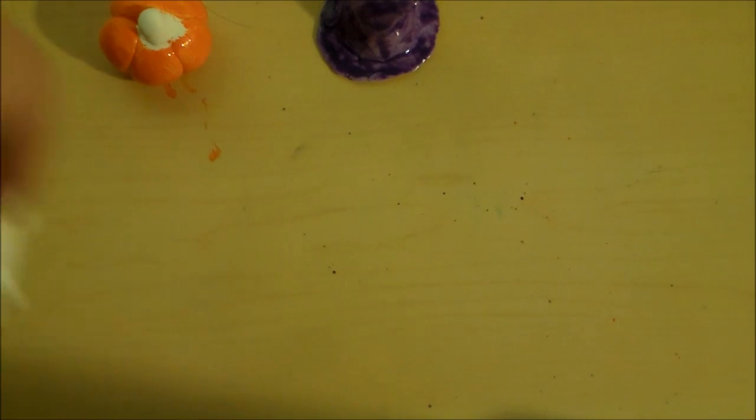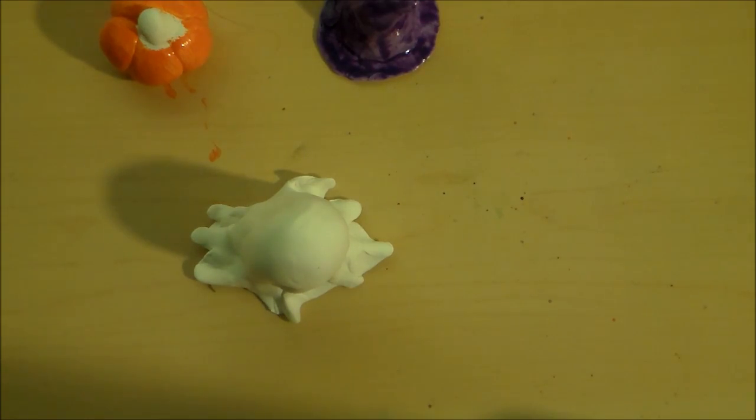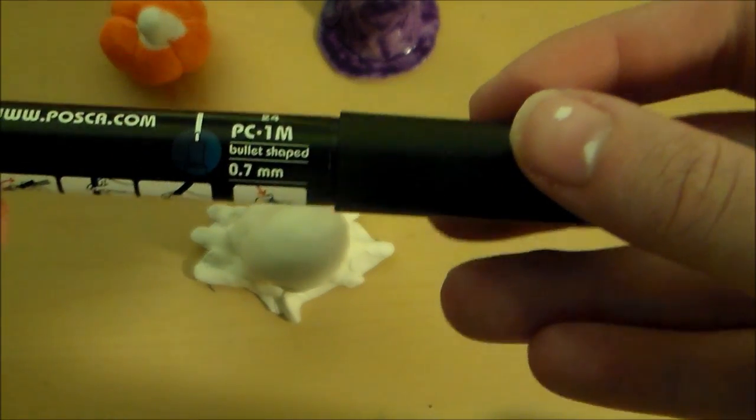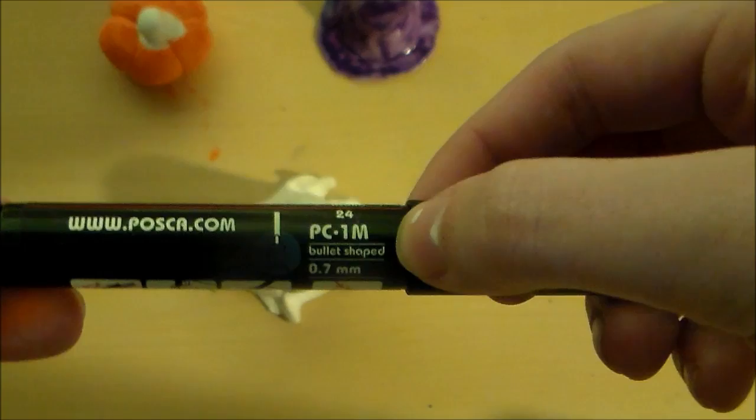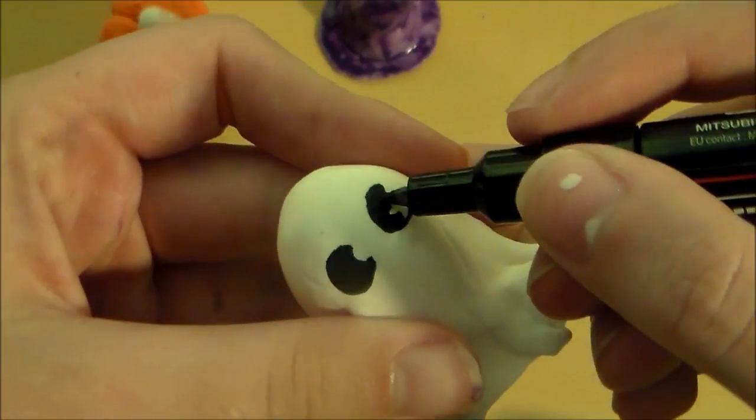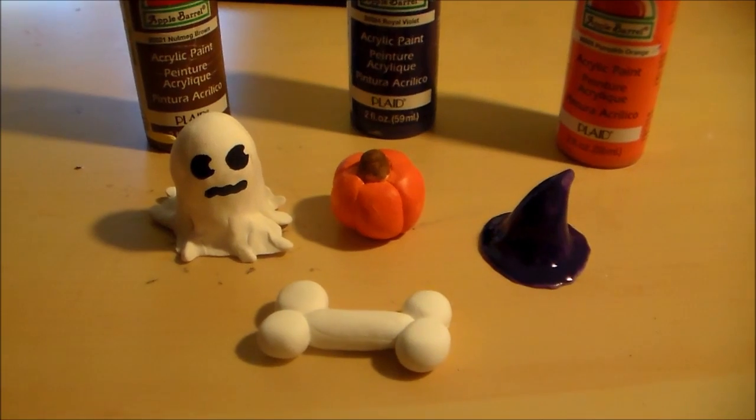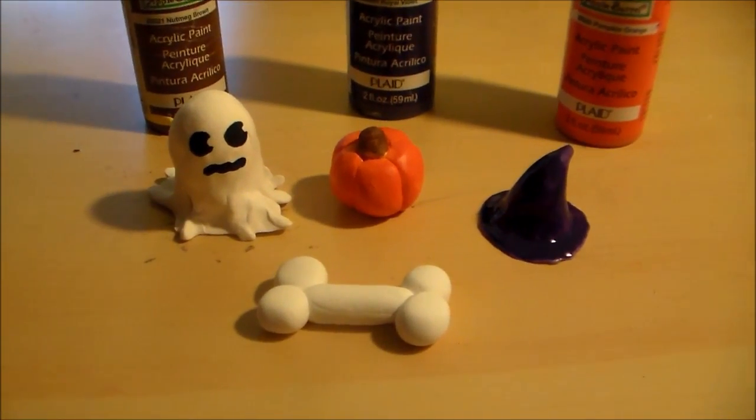Next we have our ghost. Now I'm not going to do a lot to this ghost. However, I do have a black paint marker poster pen that I will be using to draw on some ghost eyes. I am using this size right here, 0.7 millimeters to paint on my eyeballs. And once the paints have dried, you're done and you have yourself some miniature Halloween decorations.